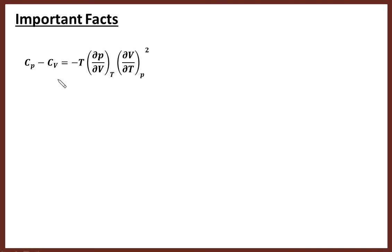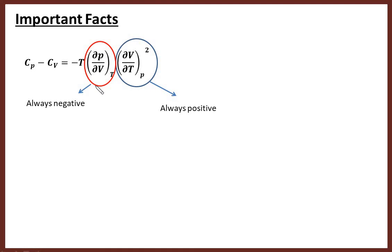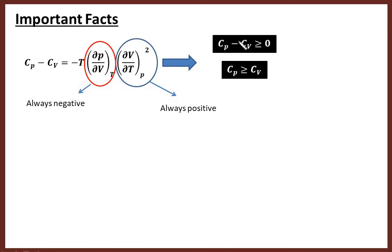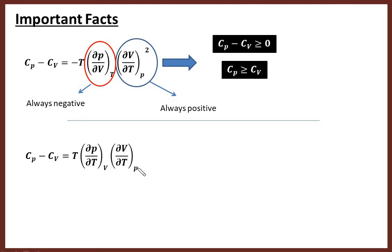Note some important facts. In the Cp minus Cv expression, one factor is squared so it cannot be negative. The factor (∂P/∂V)_T is always negative because increasing pressure reduces volume. There is already a negative sign, so overall the right-hand side is always positive or zero. Therefore Cp minus Cv is always greater than or equal to zero, meaning Cp is always greater than or equal to Cv. Cp cannot be less than Cv under any circumstances.